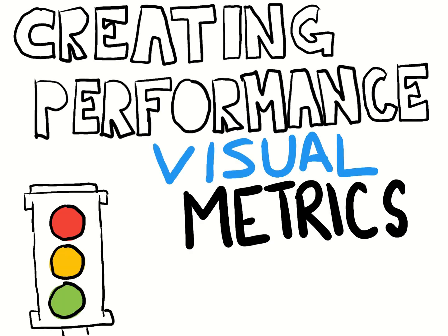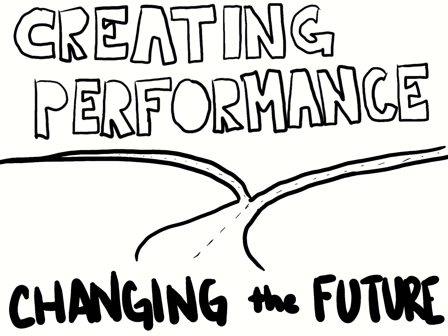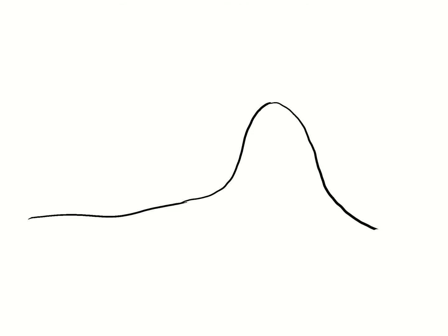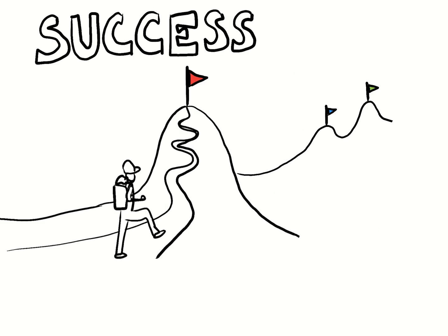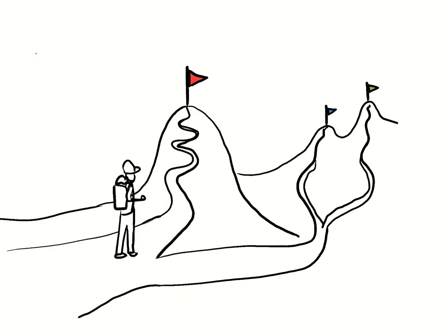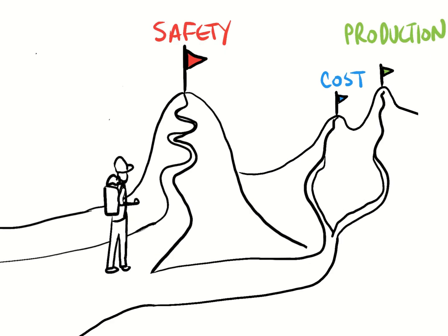My name is Teresa and this is about creating performance using visual metrics to change the future. In our work there are certain elements that define success. These key performance indicators are the metrics that help us to understand how we're performing. In operations these are often safety, production, and cost.